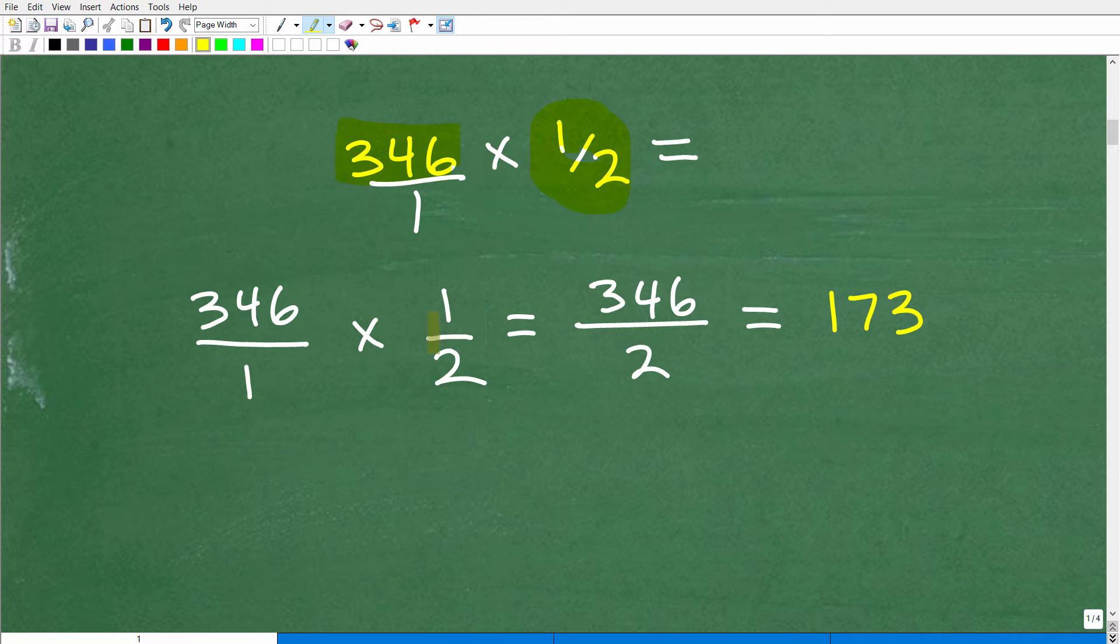So the key here is understanding how to multiply fractions. So how do we multiply fractions? Well, you're going to multiply the respective numerators and denominators. So this would be 346 times one, which of course is 346. And then we have one times two, which is two.